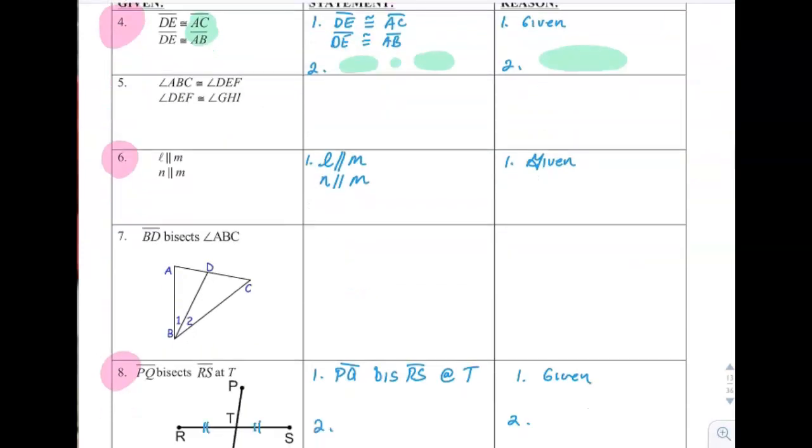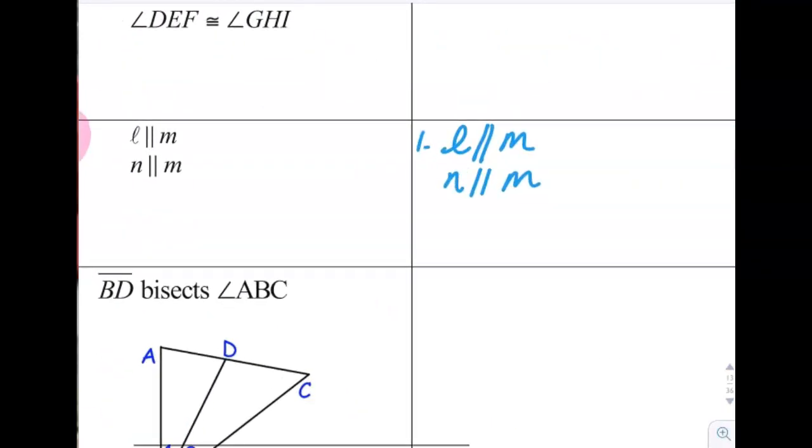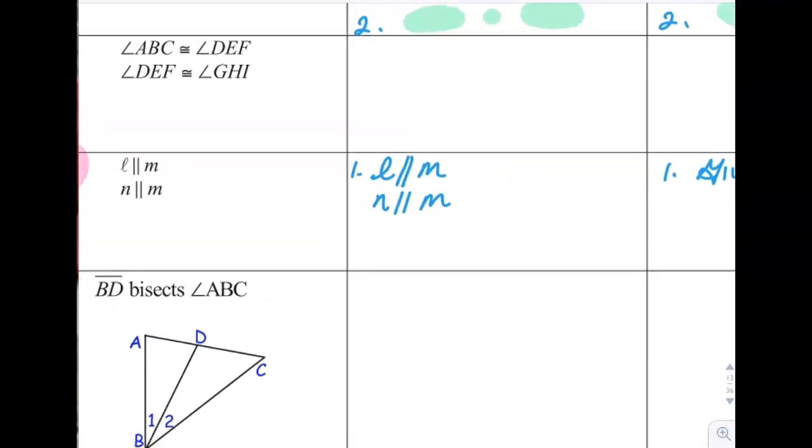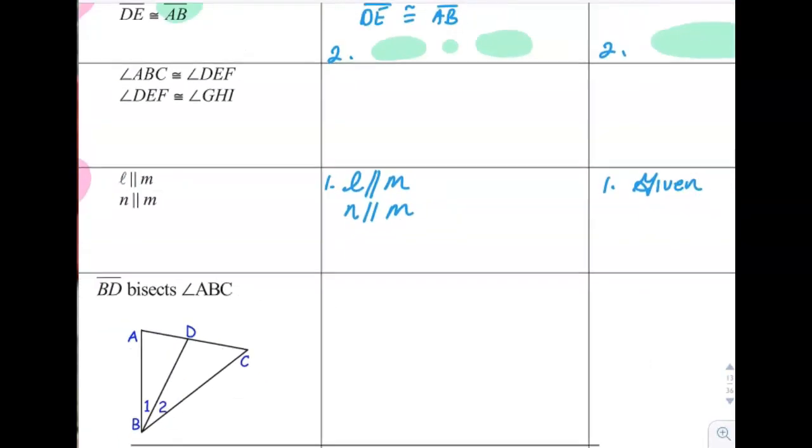Same idea in number six. If L is parallel to M and N is parallel to M, and that's given, if they're both parallel to M, then they have to be parallel to each other. So step two would be L is parallel to N because of the transitive property again. So that was the new thing we learned today.